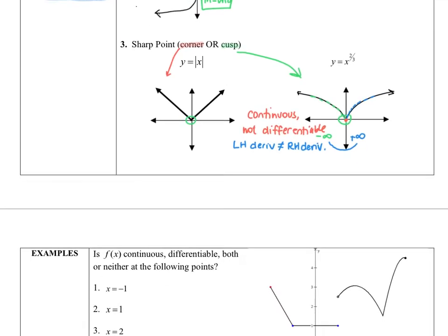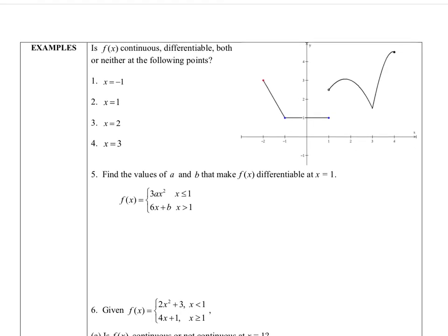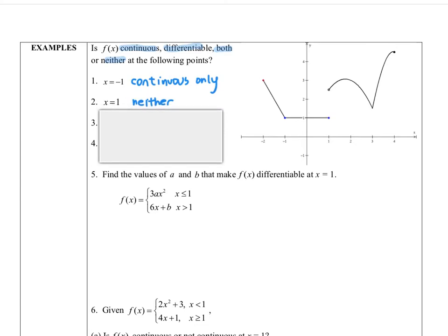Let's look at some examples. These first four questions examine a graph and ask whether each point is continuous, differentiable, both, or neither. At x equals negative one, tracing along the function, it is continuous, but because of the corner point it is not differentiable — continuous only. At x equals one, there is a jump discontinuity, which means the function is not continuous and therefore not differentiable — neither.